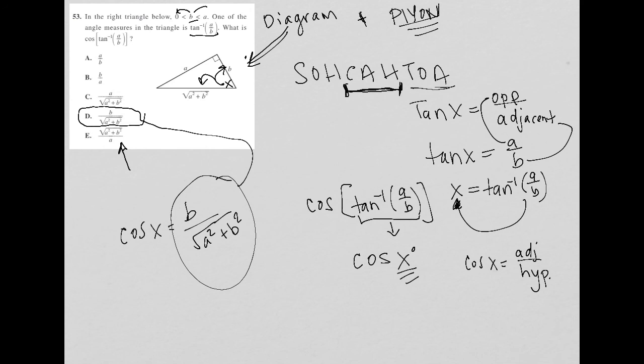So a little bit of a tricky question because it looks harder than it really is. In essence, this whole tan inverse A over B was only useful in letting us know where to find the angle that we care about. And then from there, it just becomes a normal, very simple SOHCAHTOA question.